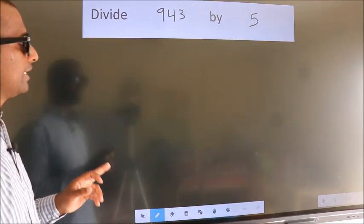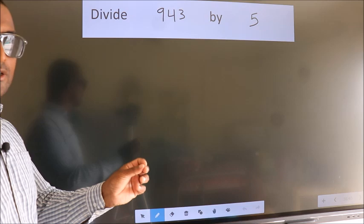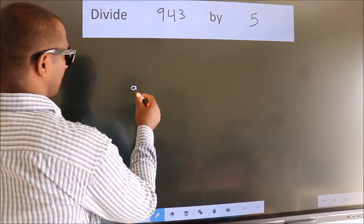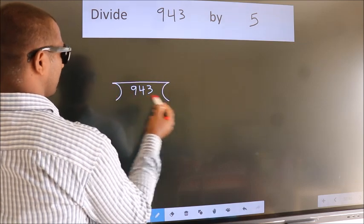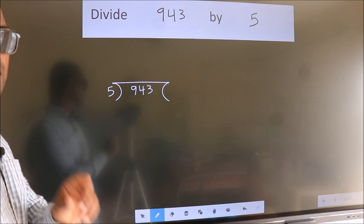Divide 943 by 5. To do this division, we should frame it in this way: 943 here, 5 here. This is your step 1.